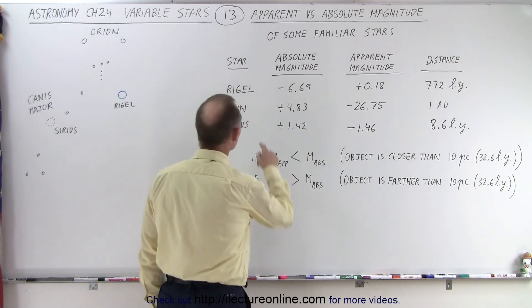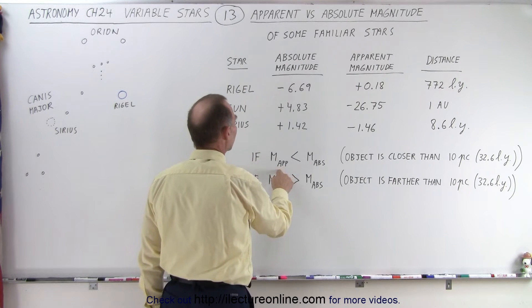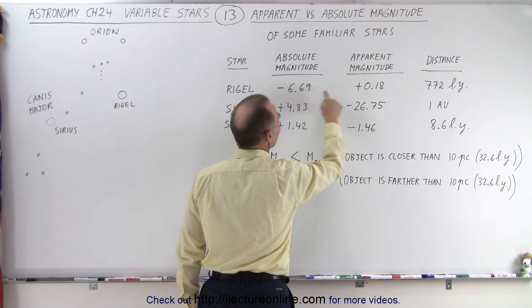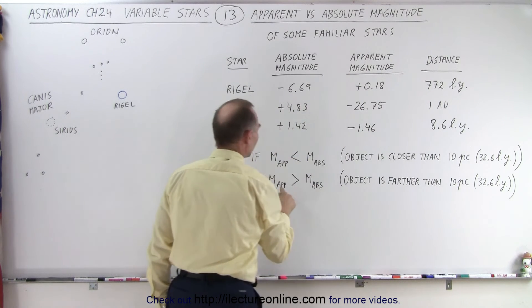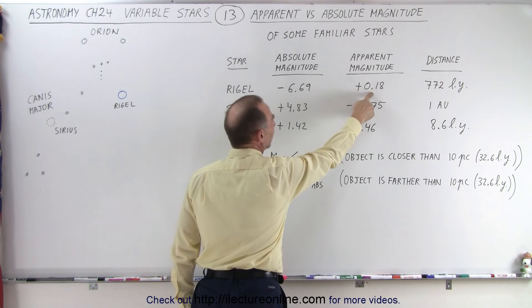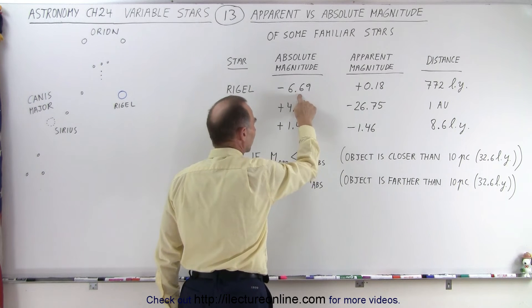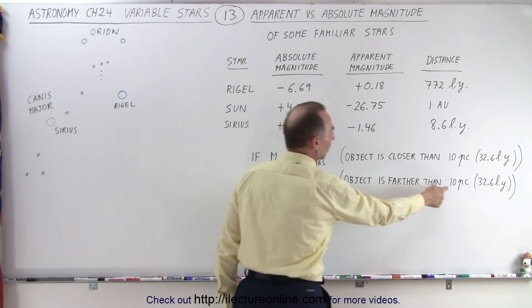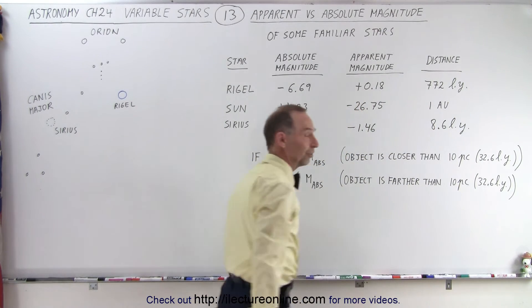All right. First of all, Rigel. Is the apparent smaller than the absolute? Here's the apparent, here's the absolute. It's not smaller. It is bigger. It's a bigger number. 0.18 is a bigger number than the negative 6.69. So therefore, the object is farther away than 10 parsecs. Sure enough, 772 light years.